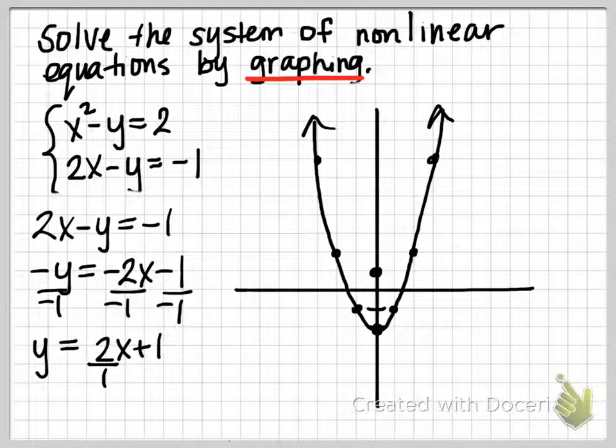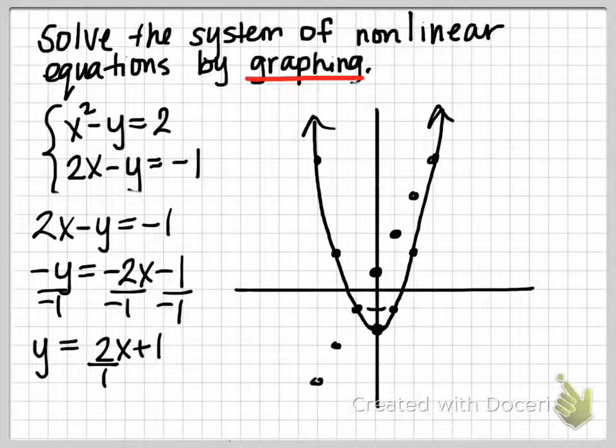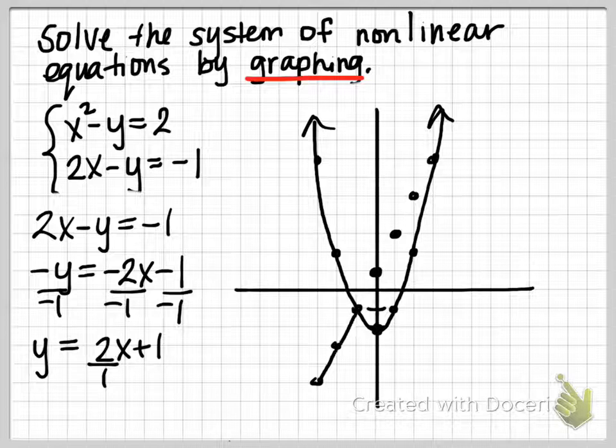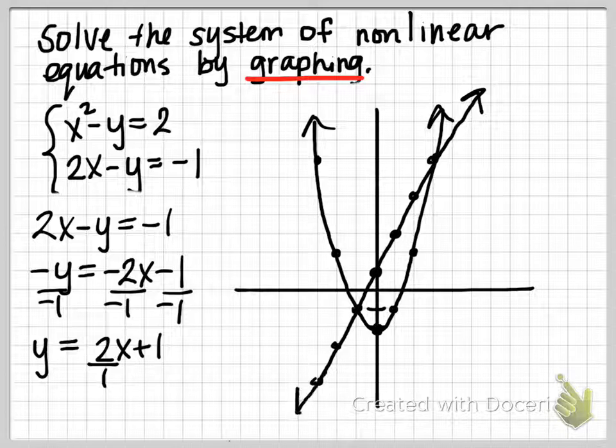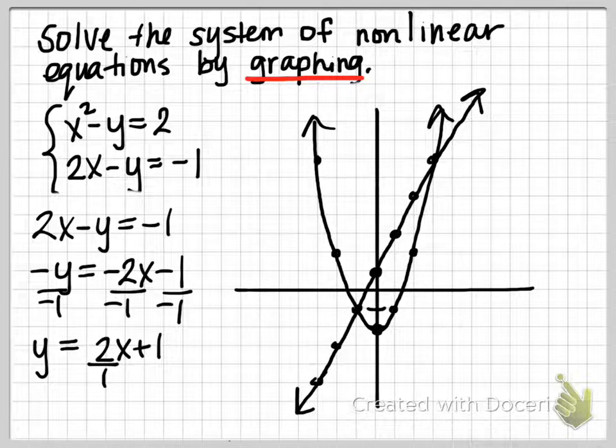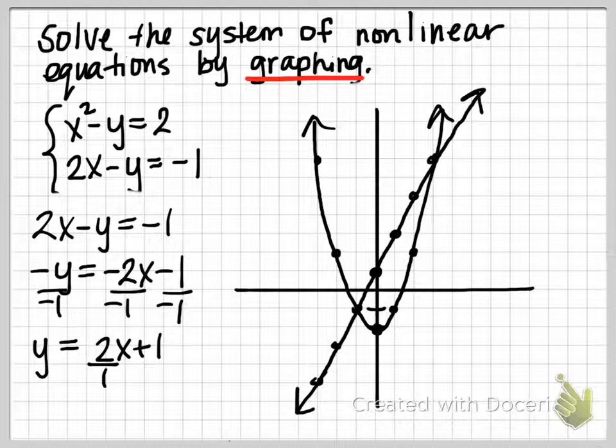We'll also go down 2 left 1 to obtain some additional points. We want to be as accurate as possible since we're using our graph to actually solve the system. So the more accuracy, the better. You definitely want to be graphing on graph paper for systems of equations that you're trying to solve by graphing.